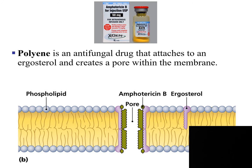The next category of drug that affects membranes is polyenes. Polyene is an antifungal drug that attaches to the ergosterol, which is a cholesterol derivative. When it attaches to the ergosterol, it creates a pore in the membrane of fungi. So fungi contain the ergosterol; therefore, this drug is specific to fungi.